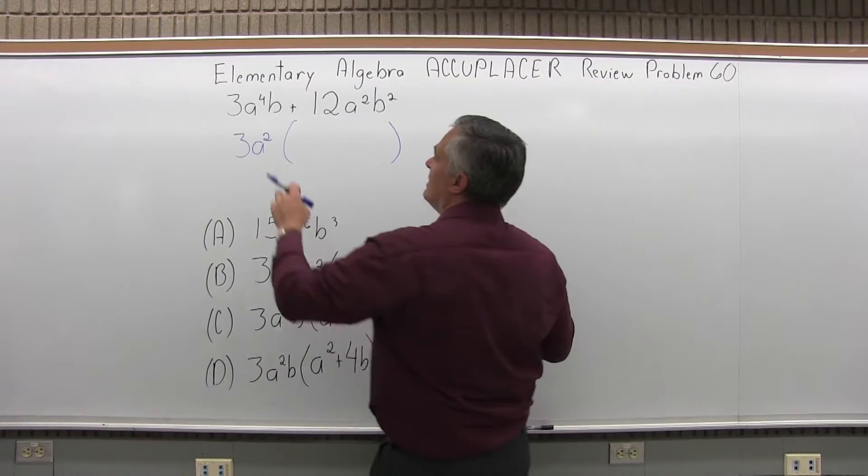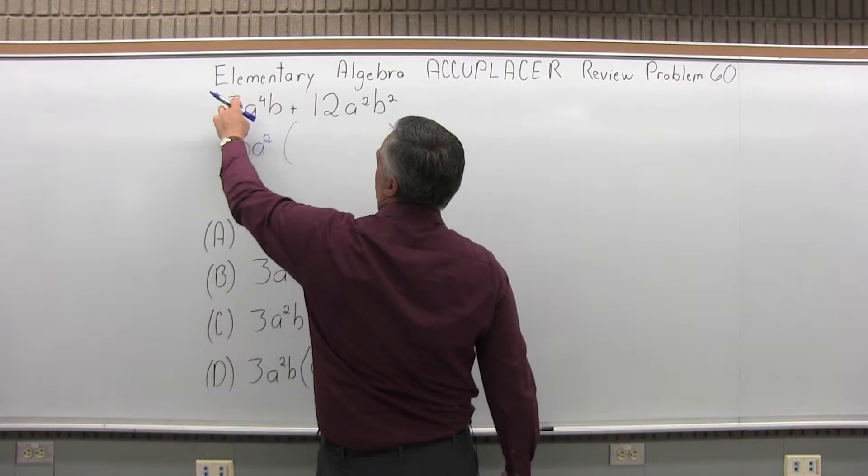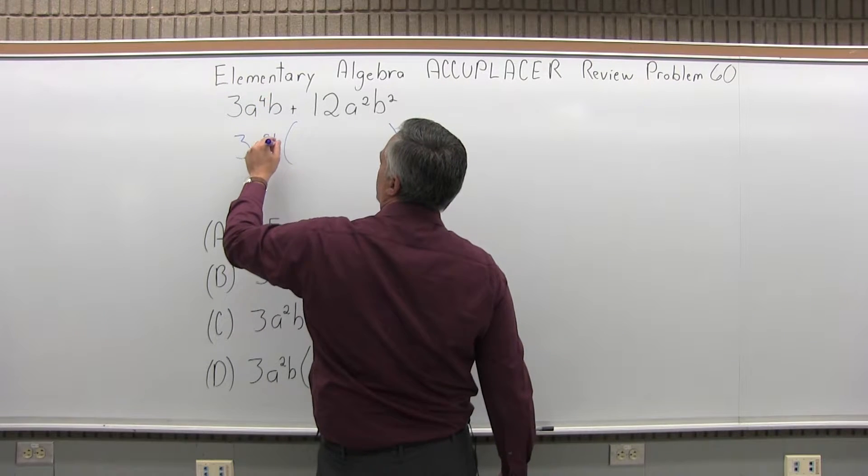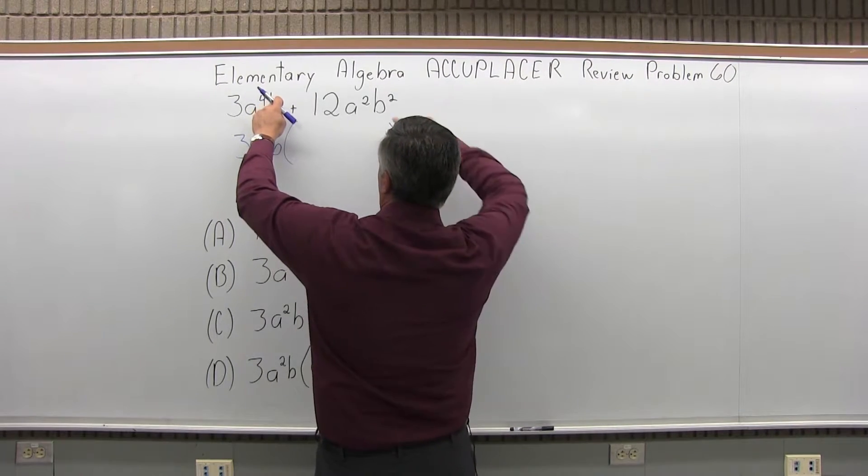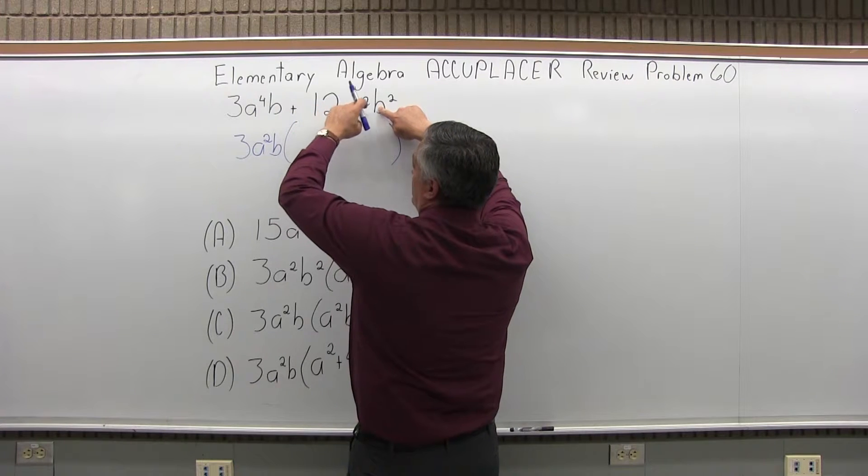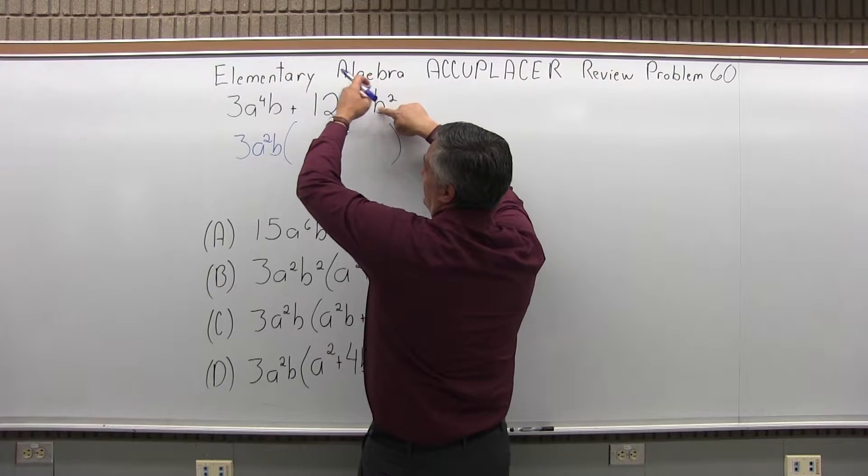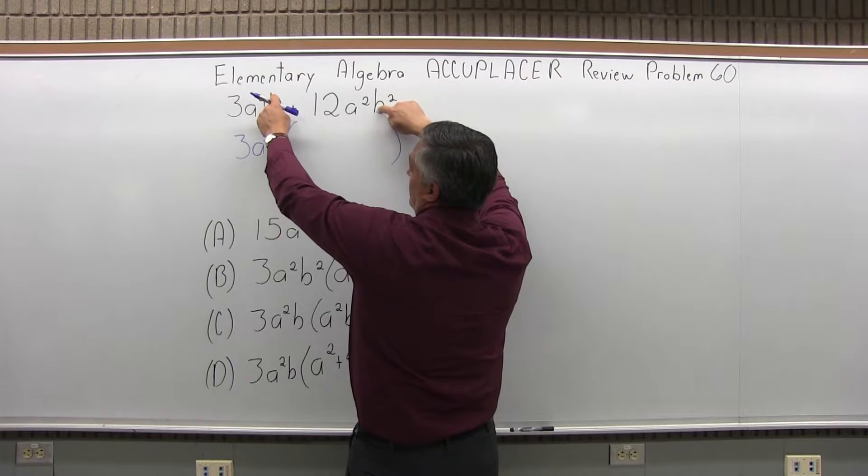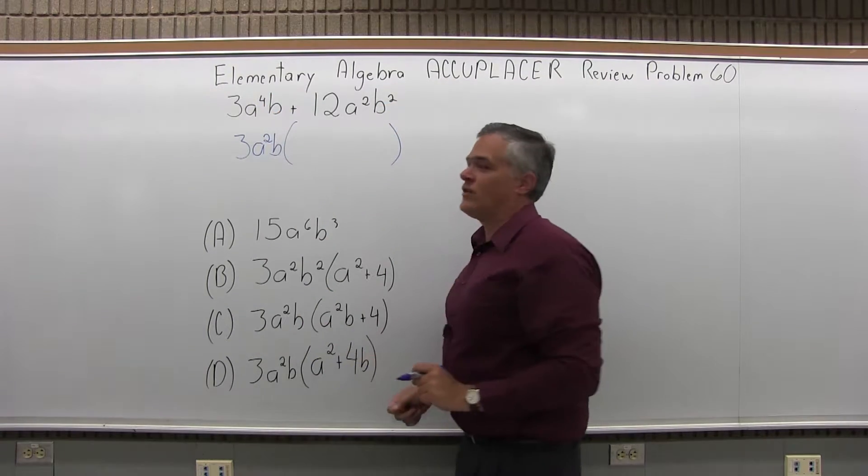That would just be B because the first chunk, the 3A to the fourth B, is kind of limiting the B to just the B to the first power. So the second chunk, the 12A squared B squared, I can take out another B, but in order to make it come out of both, I have to just do B to the first.